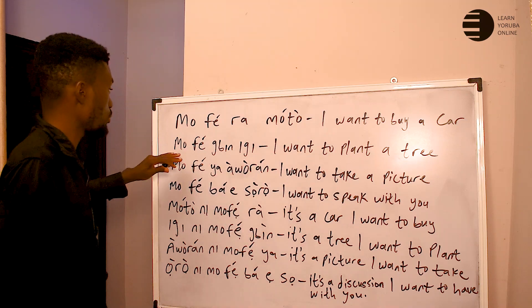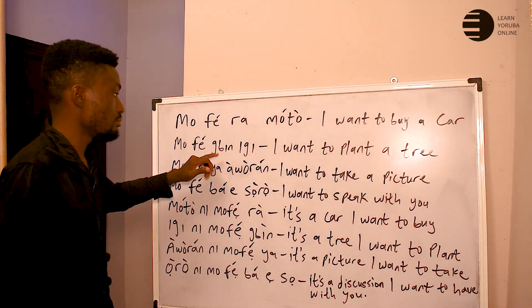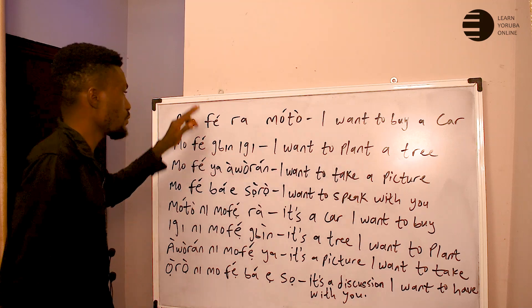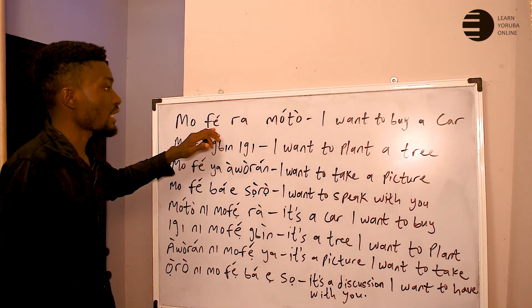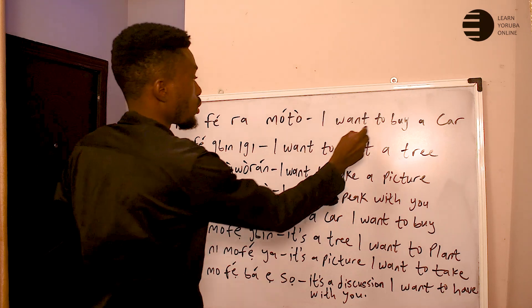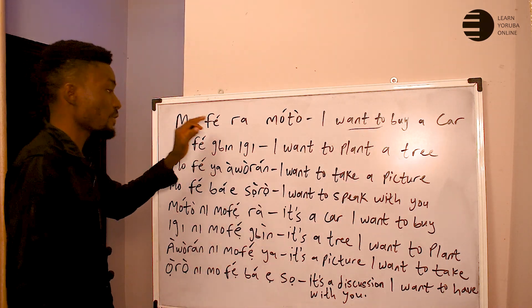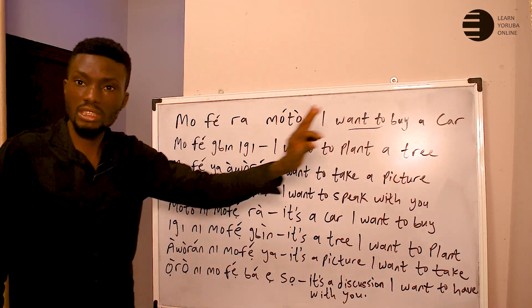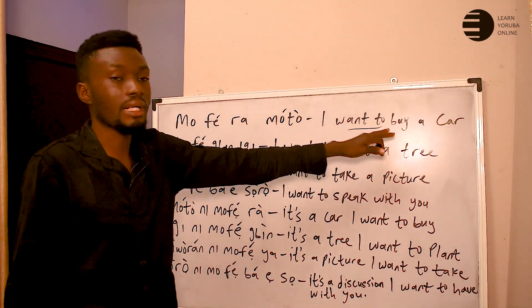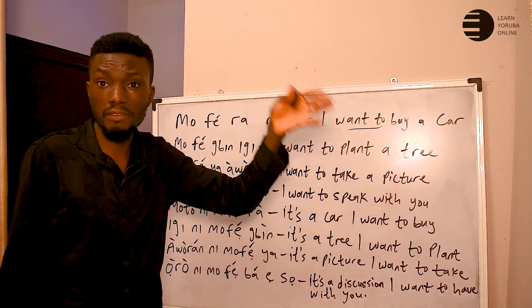If you want to say 'mofe be igi,' 'be' means 'to plant.' So 'mofe be igi' means 'I want to plant a tree.' If you look at this carefully, 'fẹ' actually combines two English words — 'want' and 'to' — so 'fẹ' is 'want to' in English. 'Mofera moto' means 'I want to buy a car.'